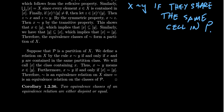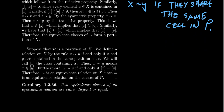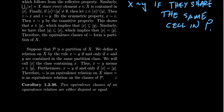This proves the first direction: if you have an equivalence relationship, then the set of equivalence classes forms a partition for the set. Let's go the other way around. Let's assume we have a partition on the set X — partition means there's a collection of cells inside P. These are non-empty subsets of X, the union of all cells gives us X, and the intersection of distinct cells gives us the empty set.